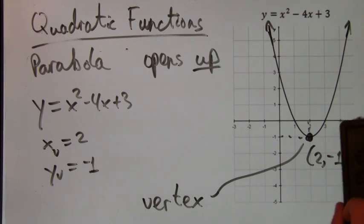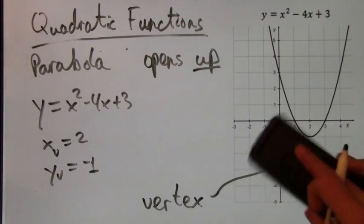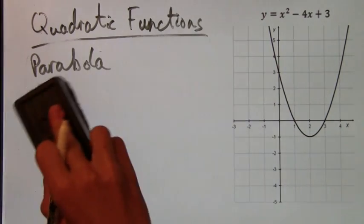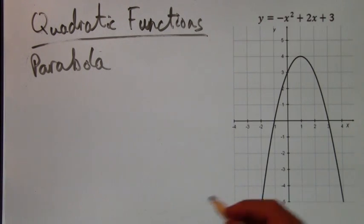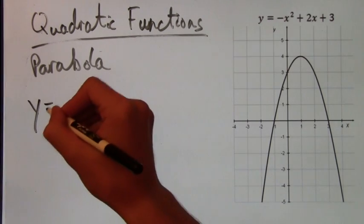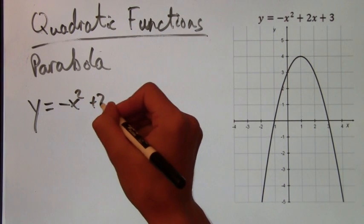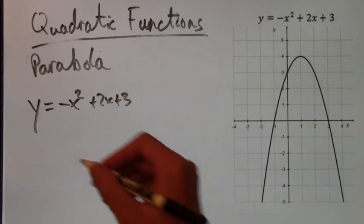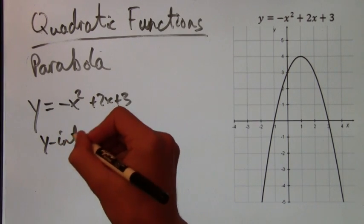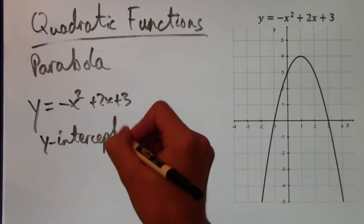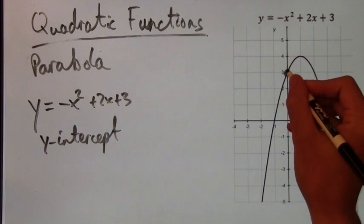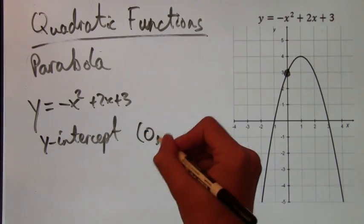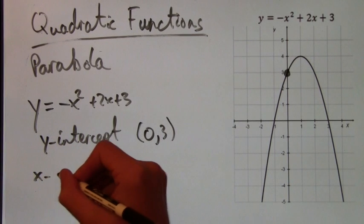So now we're ready for the next example of a parabola. This time, the parabola is going to open down, so you'll have something to contrast with. We have y equals negative x squared plus 2x plus 3. Again, we have a y-intercept, 0, 3. And we have 2 x-intercepts again.